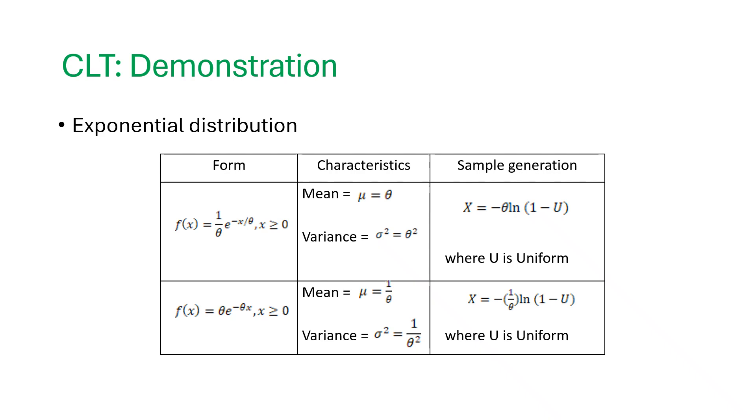Another demonstration for exponential distribution. You can generate samples from f(x) equals 1 by theta e power minus x by theta. Then the corresponding sample generation will be x equals minus theta times log(1 minus u). Similarly, if f(x) is defined as theta e power minus theta x, then the sample generation is x equals minus 1 upon theta log(1 minus u). And where u is the uniform random sample.